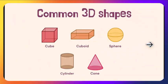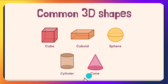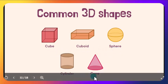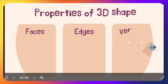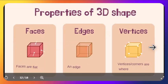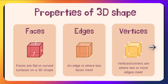Some common 3D shapes are cube, cuboid, square, cylinder, and cone. Before identifying their properties, you should know what faces, edges, and vertices are.